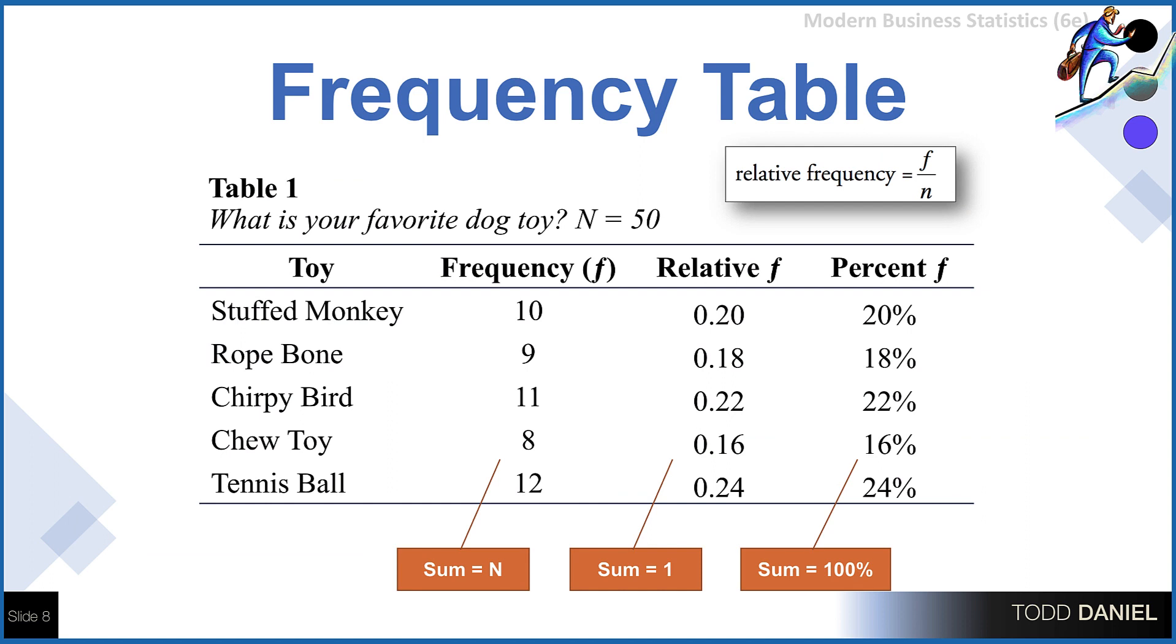Well, this is an example of an APA style frequency table for the dog toys dataset. Notice that we have a categorical variable, favorite toy, in the first column. There are five categories within this variable. The simple frequency goes into the second column. This is a simple count of how many dogs selected any particular toy as their favorite. The relative frequency is the simple frequency divided by the sample size, which in this case is 50. We had 50 dogs complete our survey. The percent frequency multiplies the relative frequency by 100 and adds a percent sign. Notice that when you add up the columns, the sum of the frequency always equals the sample size. The relative frequencies always sum to 1, and the percent frequencies add up to 100%.